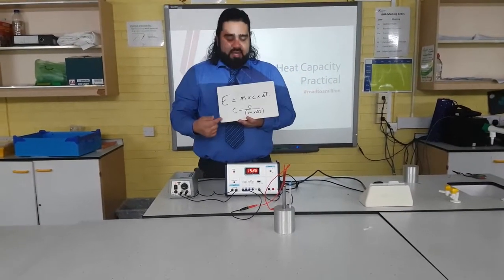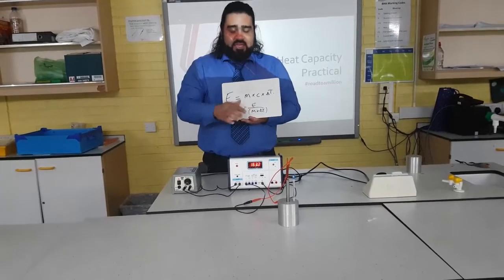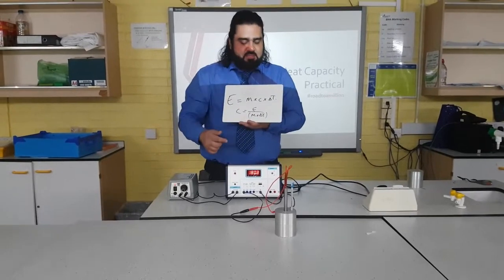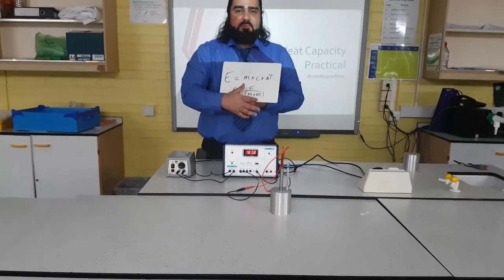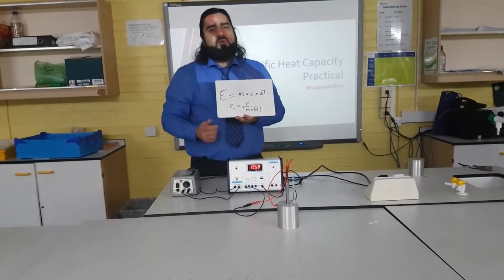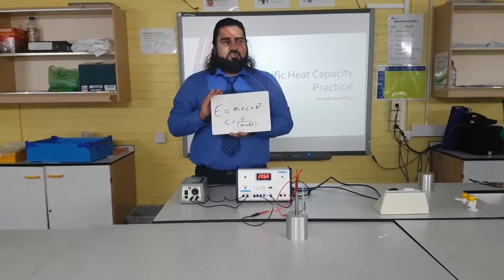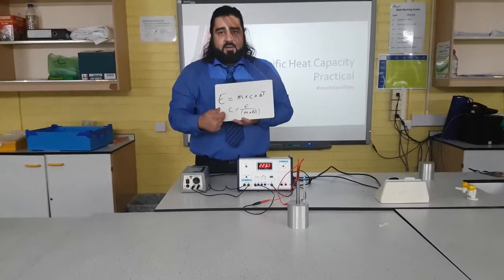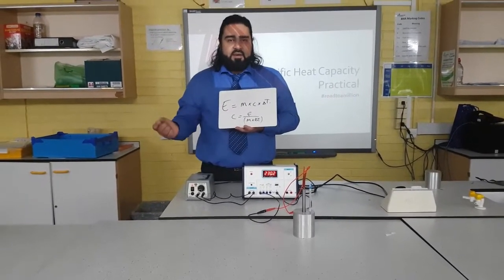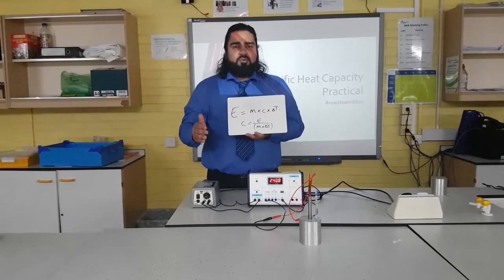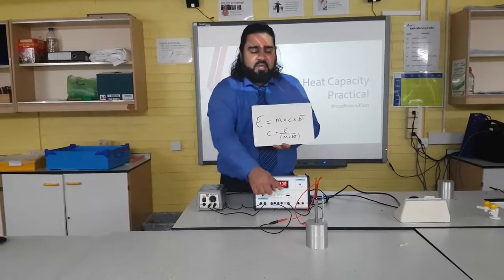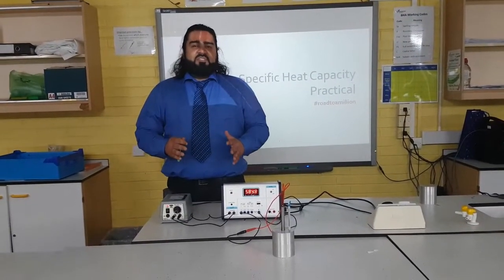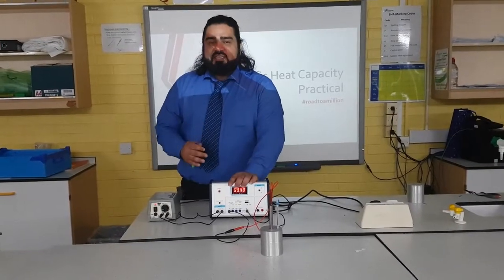The rearranged equation is: specific heat capacity equals the amount of energy used — which comes from the dual meter — divided by the mass, which was one kilogram in this instance, multiplied by the change in temperature, which in this case was a 10 degree difference. Once you have that specific heat capacity, you can compare it to an actual value from Google for the aluminium block and calculate the percentage error.